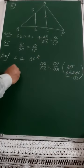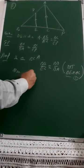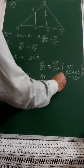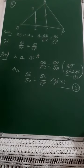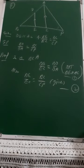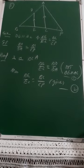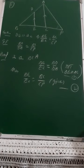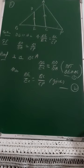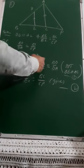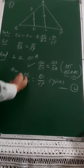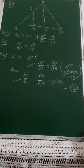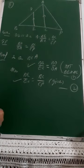Next, note that BE upon EC is given equal to BC upon CP — take this as equation two. Now compare: from equation one, BE upon EC equals BD upon DA, and from equation two, BE upon EC equals BC upon CP. Therefore BD upon DA equals BC upon CP.